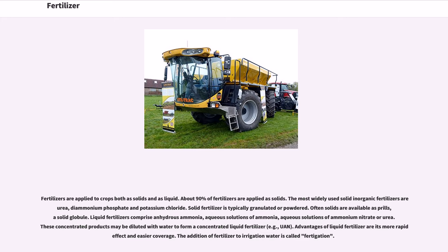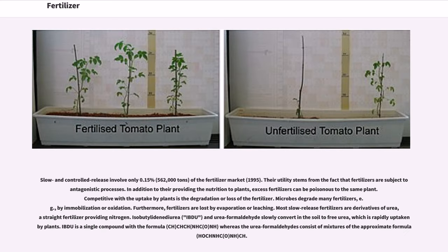Liquid fertilizers comprise anhydrous ammonia, aqueous solutions of ammonia, nitrate, or urea. These concentrated products may be diluted with water to form a concentrated liquid fertilizer. Advantages of liquid fertilizer are its more rapid effect and easier coverage. The addition of fertilizer to irrigation water is called fertigation. Slow and controlled release involve only about 0.15% (562,000 tons) of the fertilizer market as of 1995. Their utility stems from the fact that fertilizers are subject to antagonistic processes.